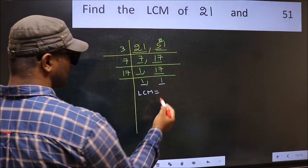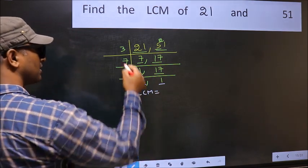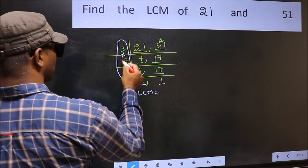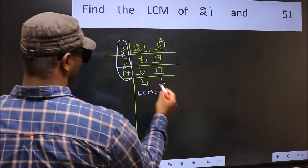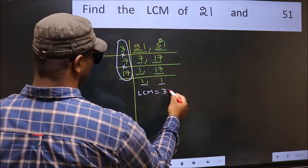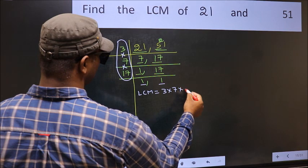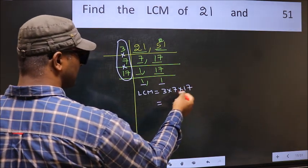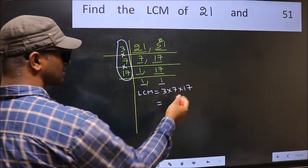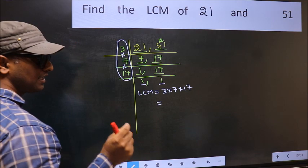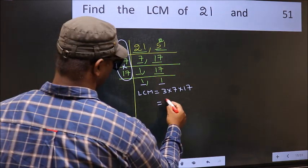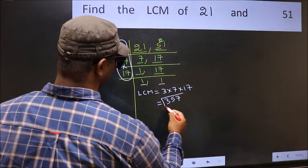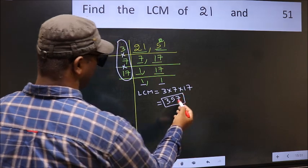So our LCM is the product of these numbers: 3 into 7 into 17. When we multiply these numbers we get 357, which is our LCM.